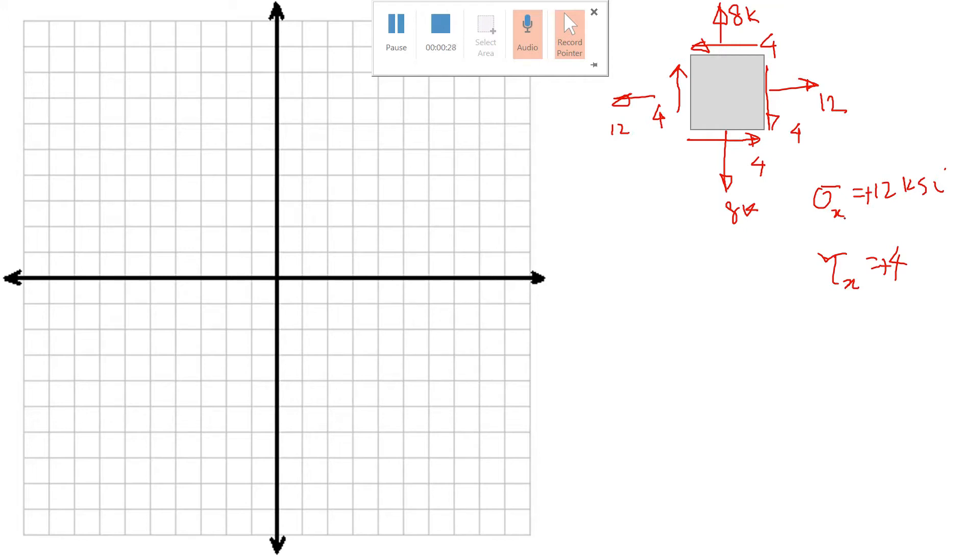So let's plot that point. I got 12. Let's say these are 4, 8, 12. Maybe we can go to 16. So 4, let's say 2, 4, 6, 8, 10, 12, and then it goes 4 positive up.